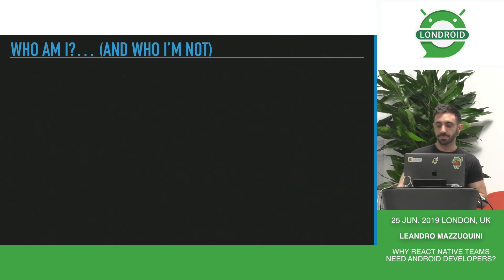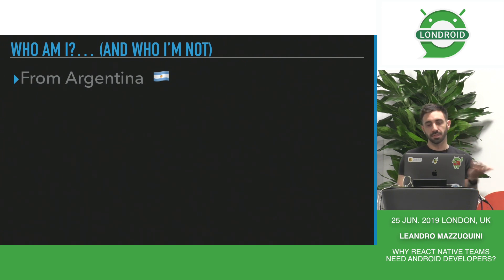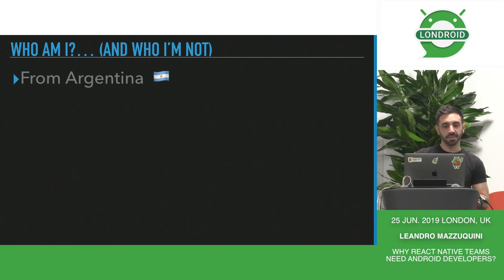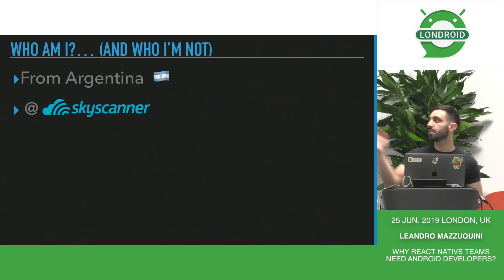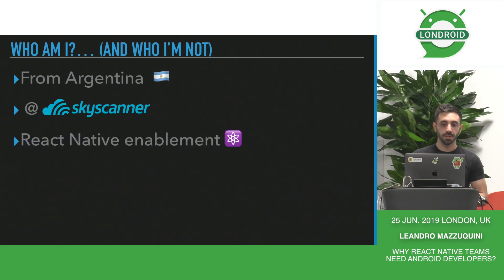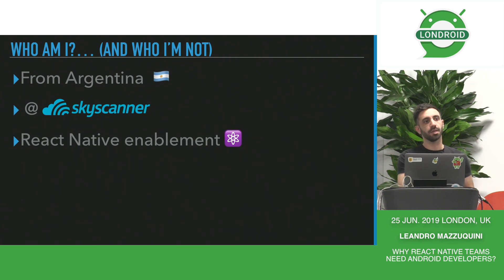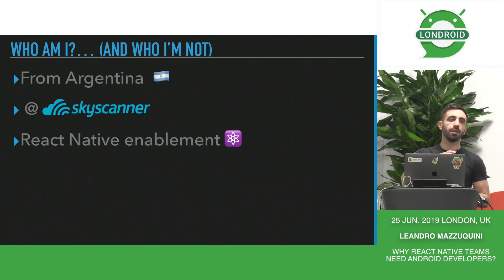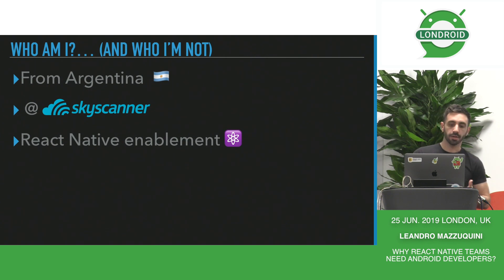First, a little bit about myself. I'm originally from Argentina, but I also have some Italian roots, so that's why you will see me speaking a lot with my hands. About a year ago, I moved all the way from Argentina to London to join Skyscanner. Since then, I've been working in the React Native Enablement team, where we are in charge of setting up and maintaining the React Native infrastructure for Skyscanner.